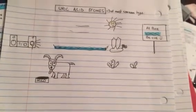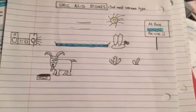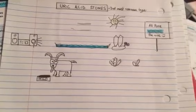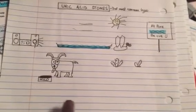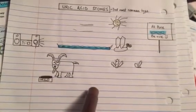Treatment involves hydrating the patient well, alkalinizing the urine, and in the case of gout, giving allopurinol. In my mnemonic, I have listed all these things that I've explained.